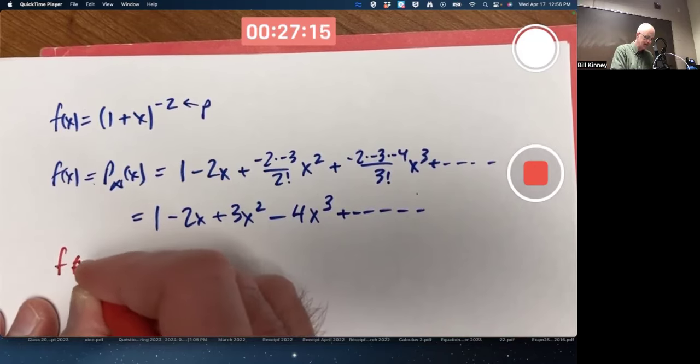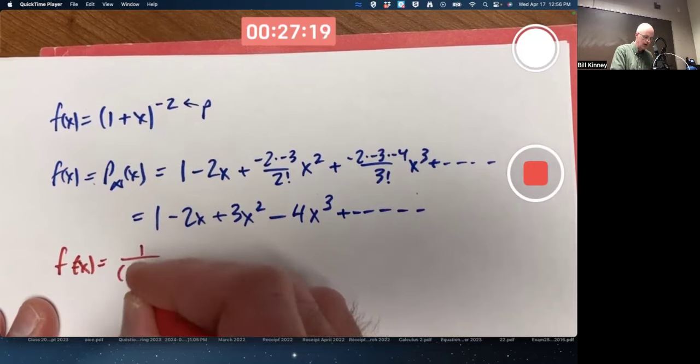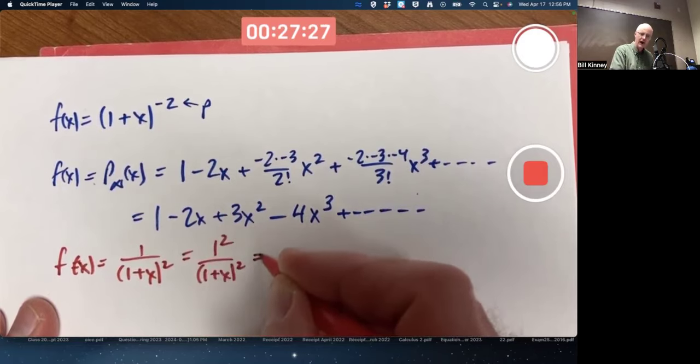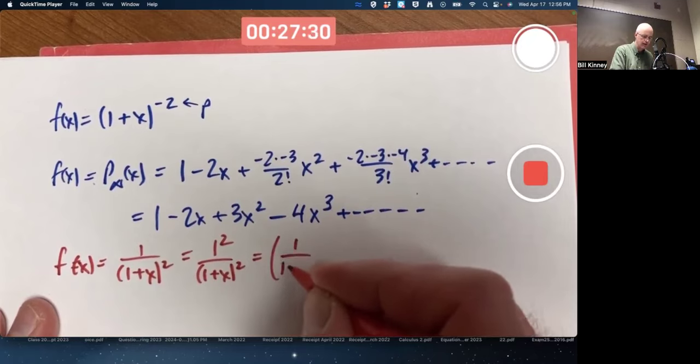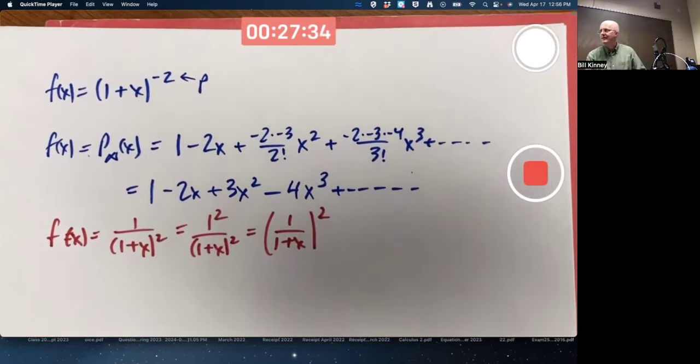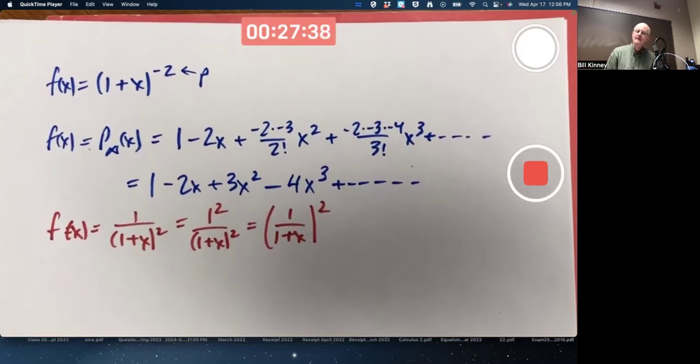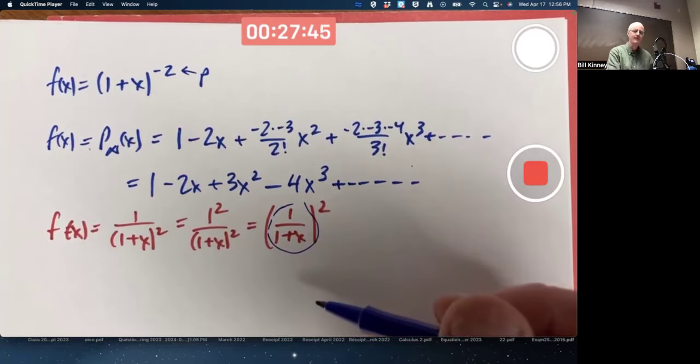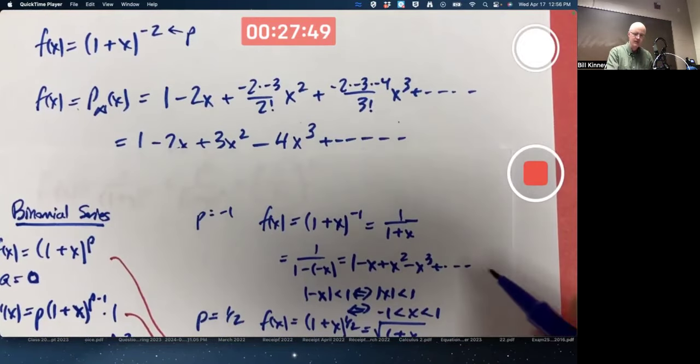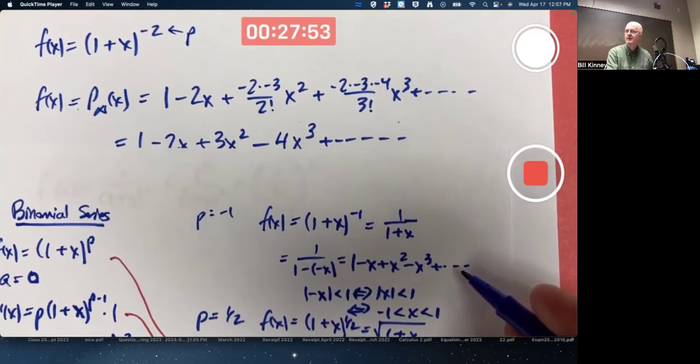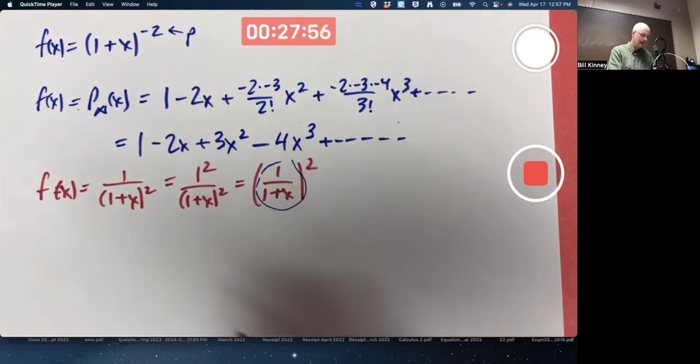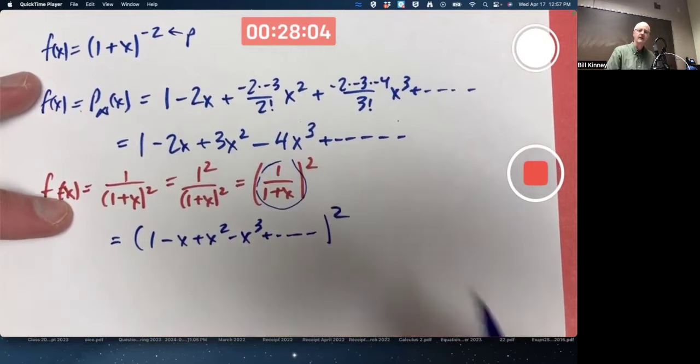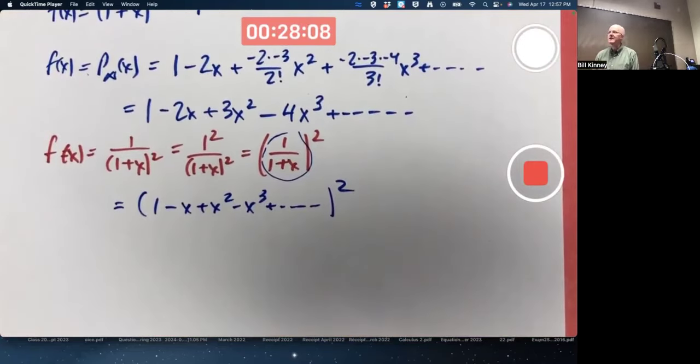f of x also equals 1 over 1 plus x squared. 1 squared is 1, so I can write this. And when you square a fraction, you square the numerator and denominator. I use that fact in reverse right there. And wait a minute. 1 over 1 plus x. We already talked about that series today. It's that one. It's geometric. Sum of a geometric series.